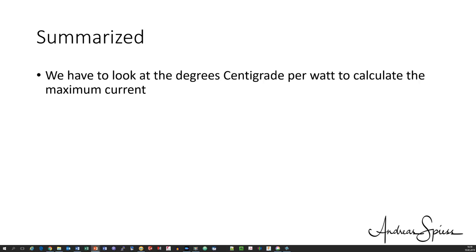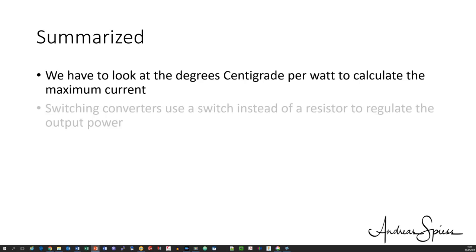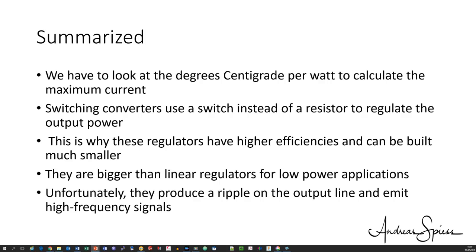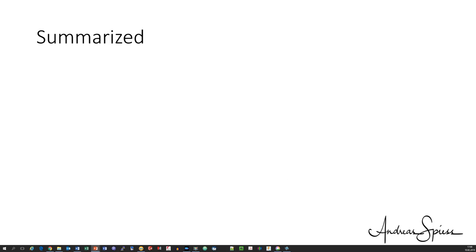Switching converters use a switch instead of a resistor to regulate the output power. Switches do not create a lot of heat. This is why these regulators have higher efficiency and can be built much smaller for higher currents or higher differences between input and output voltage. But they are usually bigger than linear regulators for low power applications. Unfortunately, they produce a ripple on the output line and emit high frequency signals. These signals can hurt radio communication, precise sensors or audio applications. Better use a linear design in these situations.